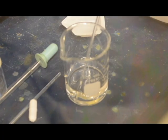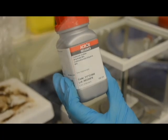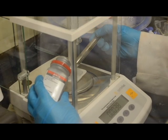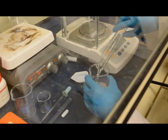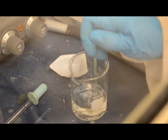First, we need to make a 0.35 molar solution of cadmium acetate by adding 2.42 grams into 30 milliliters of deionized water and stirring until it is dissolved.